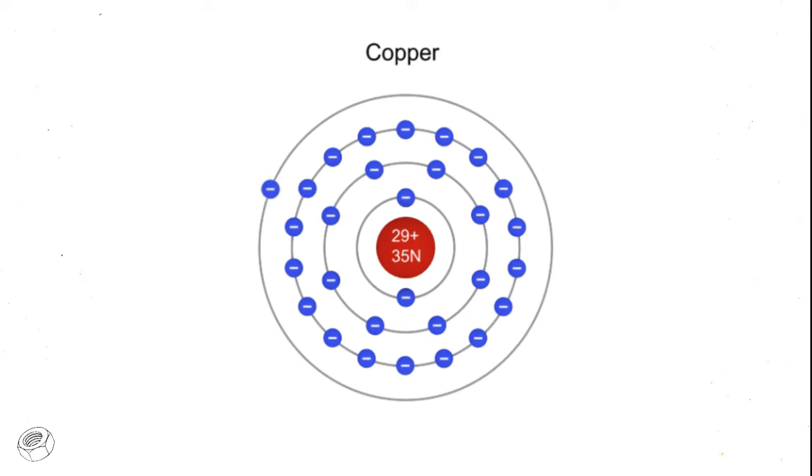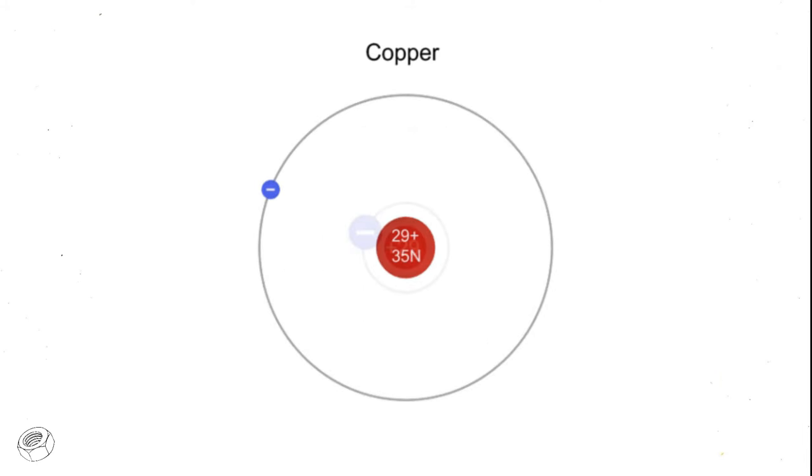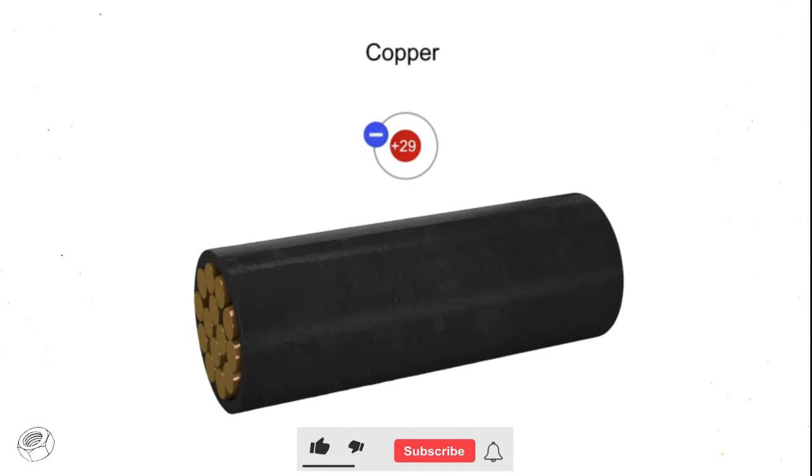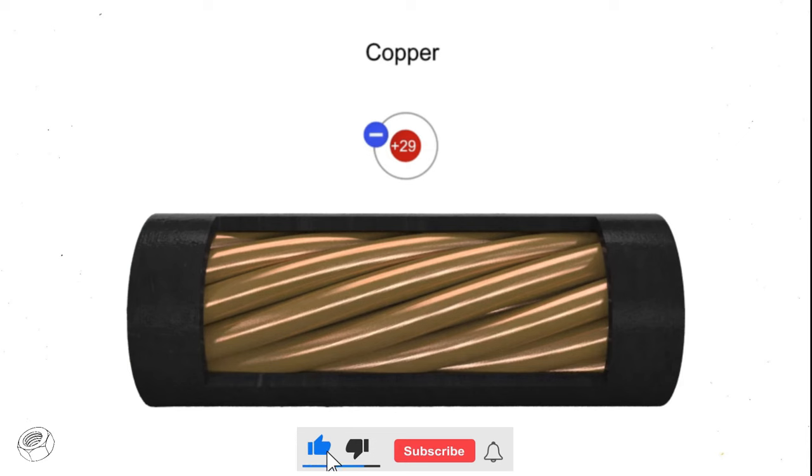Let's take a more detailed look at how these free electrons flow when a voltage is applied across a copper wire. Taking a simplified version of a copper atom with its single valence electron, let's distribute copper atoms along the length of a copper wire.